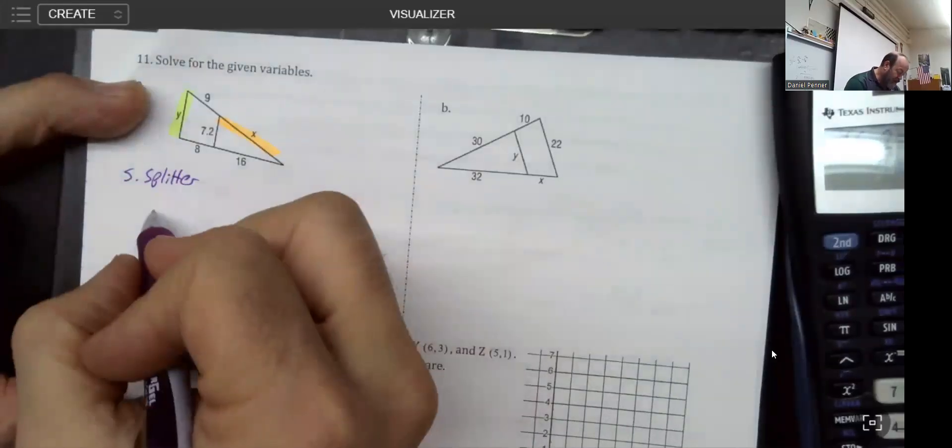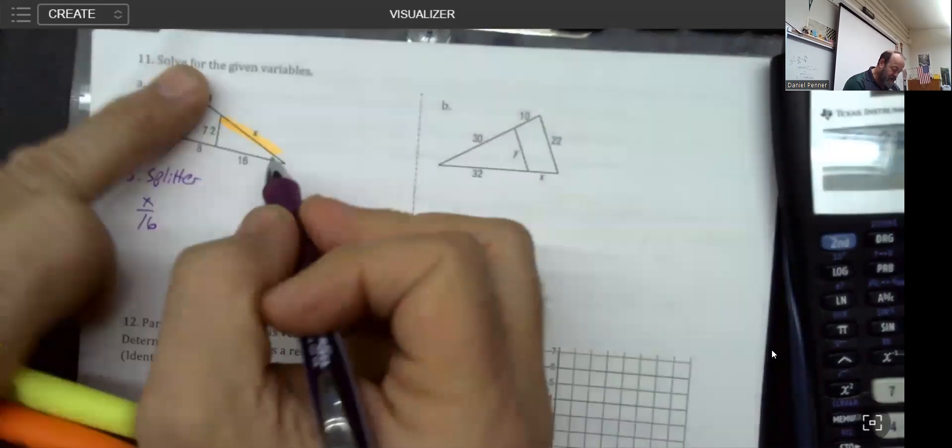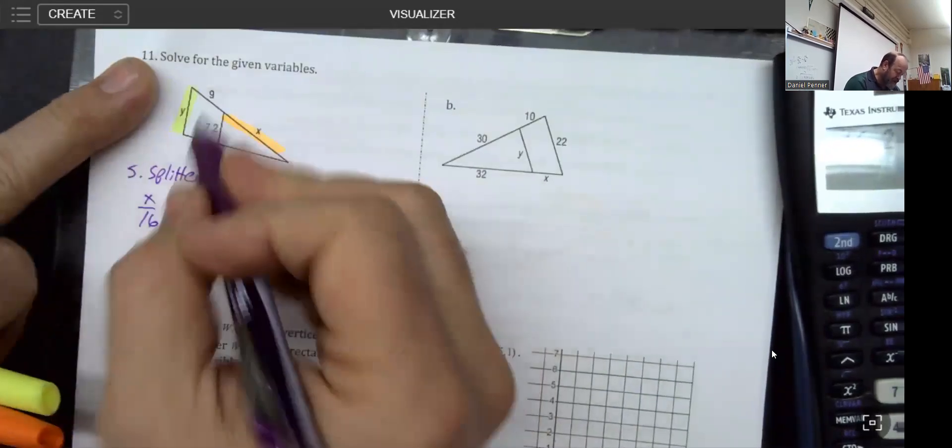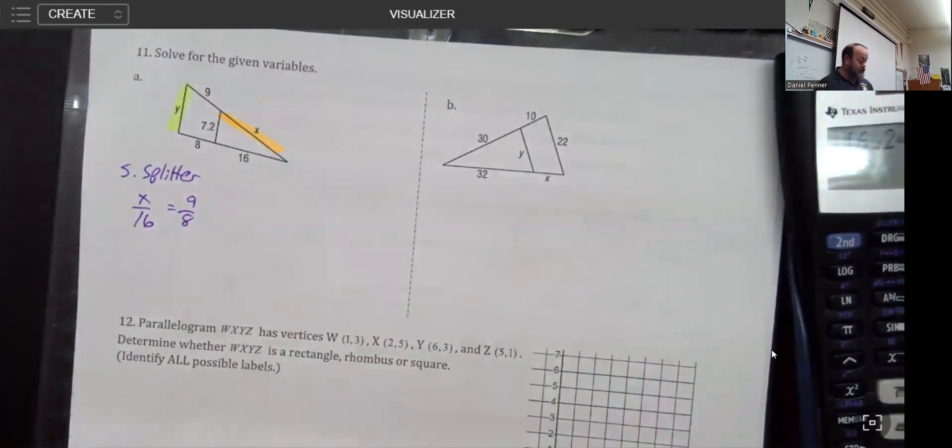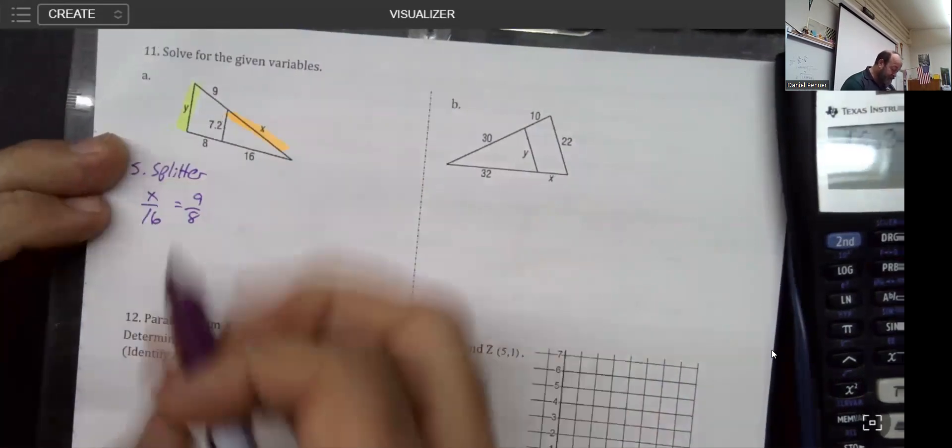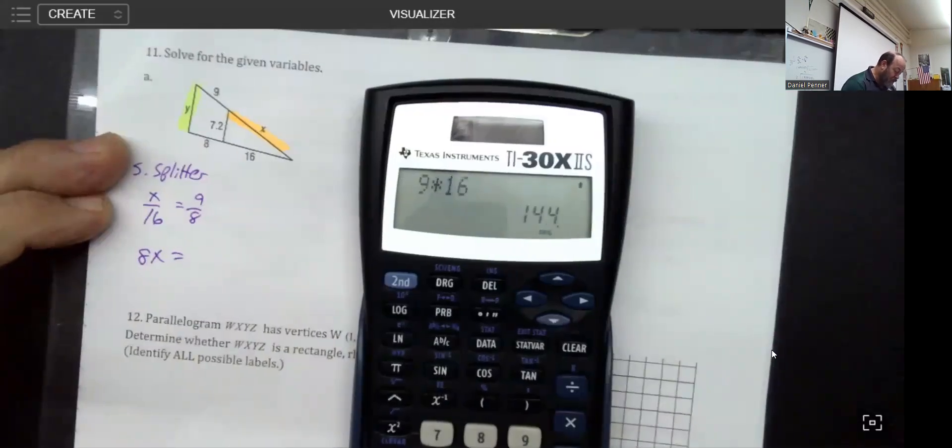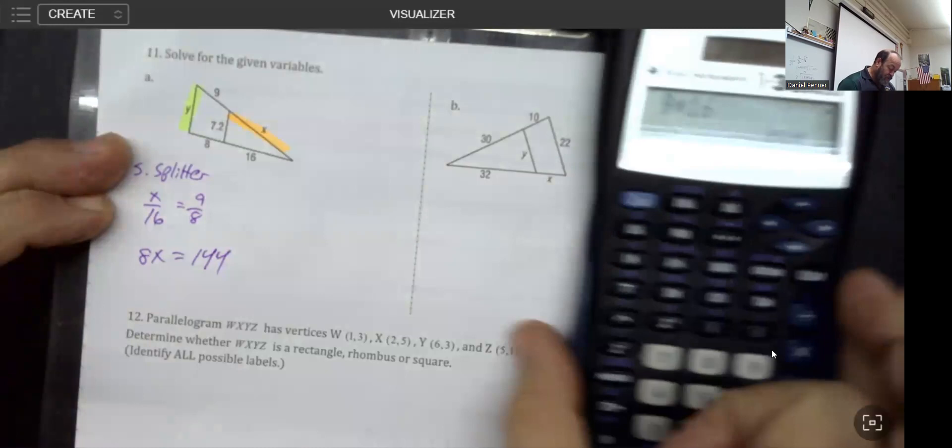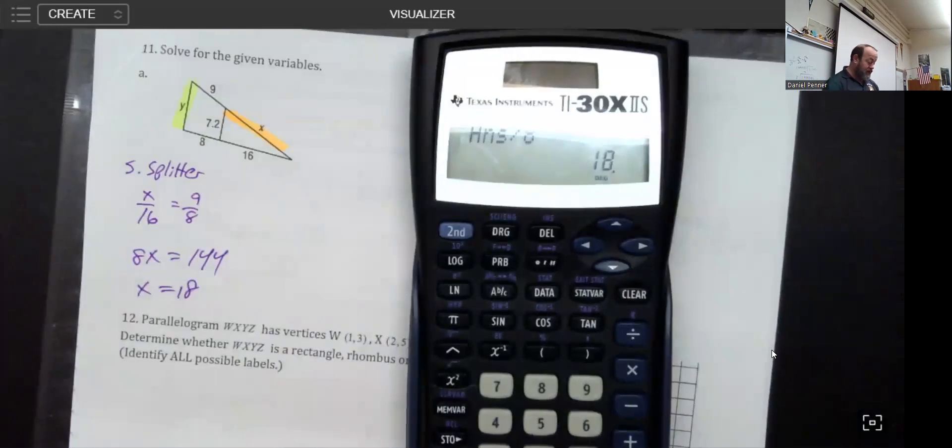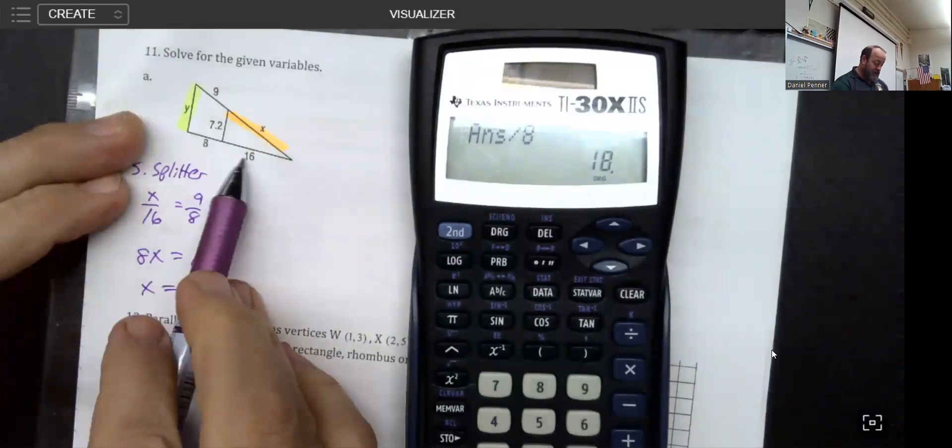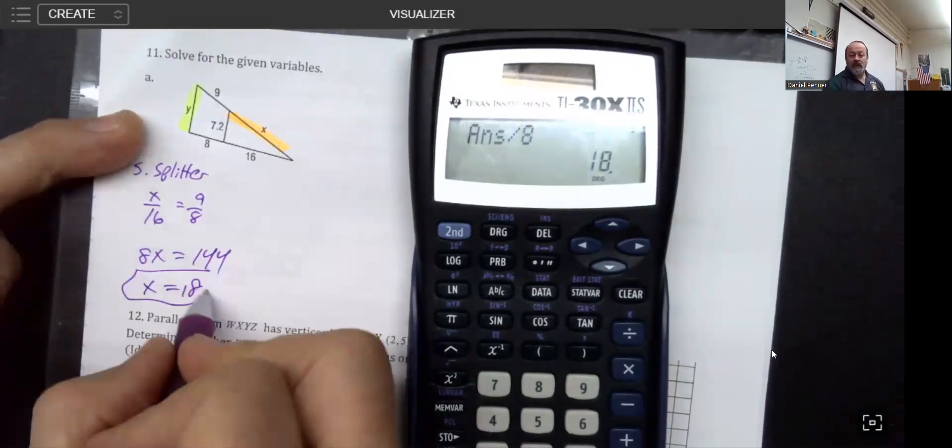The side splitter allows me to split the sides in the following way. I could actually say that the ratio of x is to 16, the top is to the bottom. Keep in mind that's the top triangle is to the bottom triangle as the top piece is to the bottom piece. If you get lucky, and this is one of those cases, you could notice that we could cross multiply. That's 9 times 16, which is 144, and you divide 144 by 8 to get 18.